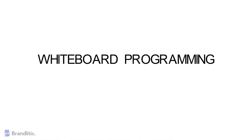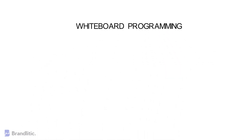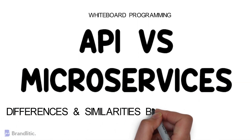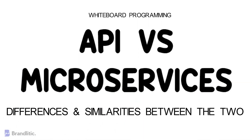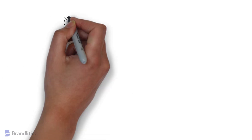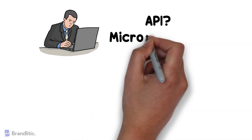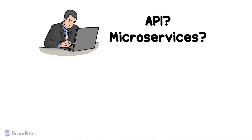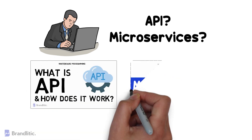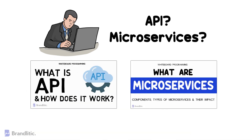Welcome to Whiteboard Programming, where we simplify programming with easy-to-understand whiteboard videos. Today I'll be sharing the difference between API and microservices, along with some similarities the two share. If you need to understand the basic meaning of what is an API and what are microservices, I highly recommend watching those two videos first — the link is in the description below.